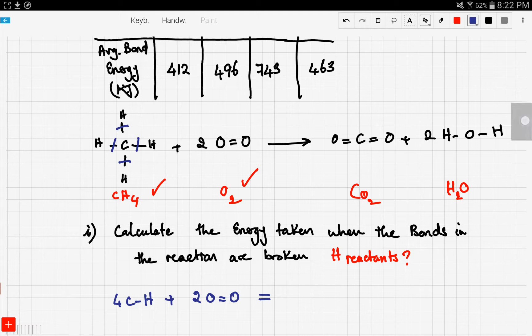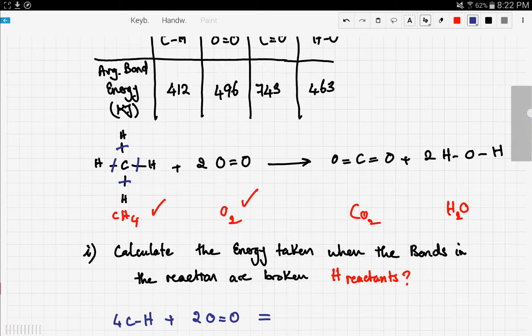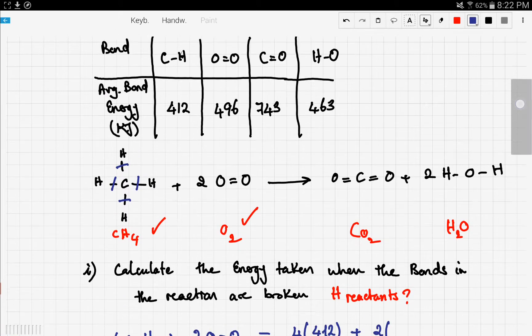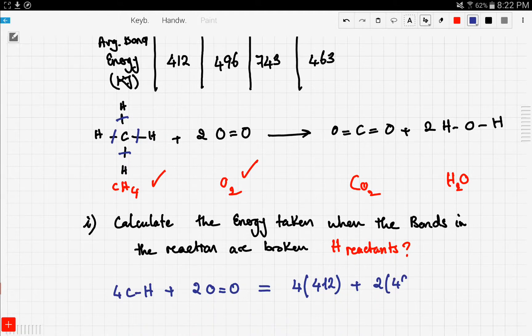Let's look at the table. The CH bond is worth 412, so it's four times 412, plus two times, let's check the table for the OO bond. It's 496, so two times 496. Do the math. You would get 2640 kJ.